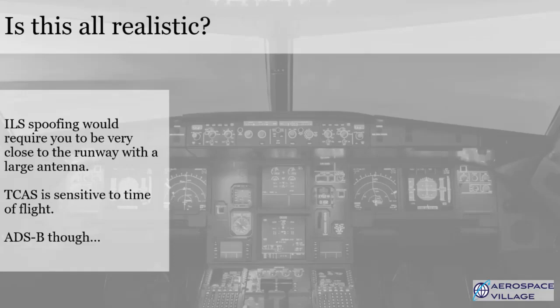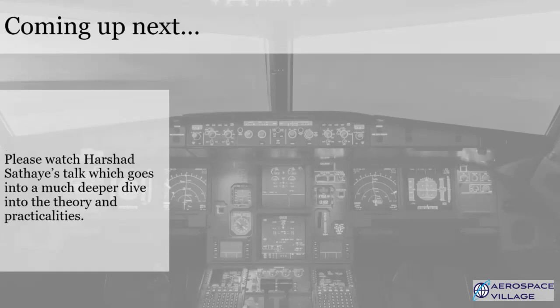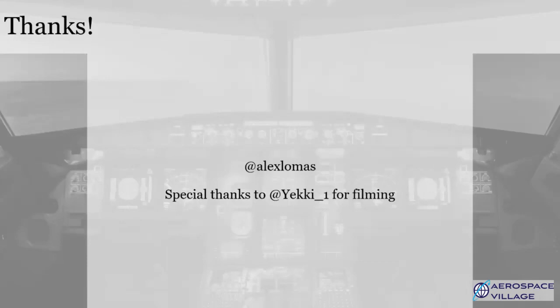I will leave Harshad to go into more detail in his talk, but I personally feel that ILS spoofing is unlikely, given you would need a pretty powerful antenna in very close proximity to the airport. This is likely to get you spotted by the police pretty quickly. It's also fairly likely that the pilot would see intermittent nav error flags in their displays telling them the ILS system was unreliable. TCAS, given it uses time of flight, would be more difficult to spoof unless you had some kind of drone floating around in the airspace. But ADS-B is relatively straightforward to generate from the ground, and that might be enough of a distraction to lead pilots to switching off the system altogether. Please do watch Harshad's talk, which goes into a much deeper dive on the theory and practicalities. A special thank you to my colleague Phil Eberle, who managed to get the simulator video at really short notice. Thank you for listening, and I really look forward to hearing your comments and thoughts in the chat.